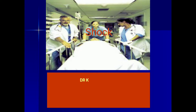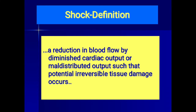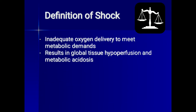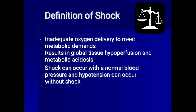Today we are going to discuss an important topic: shock. The definition of shock is a reduction in blood flow by diminished cardiac output or maldistributed output such that potential irreversible tissue damage occurs. Shock includes inadequate oxygen delivery to meet metabolic demands, resulting in global tissue hypoperfusion and metabolic acidosis. Importantly, shock can occur with a normal blood pressure, and hypotension can occur without shock. So hypotension is not the only criteria to define shock.